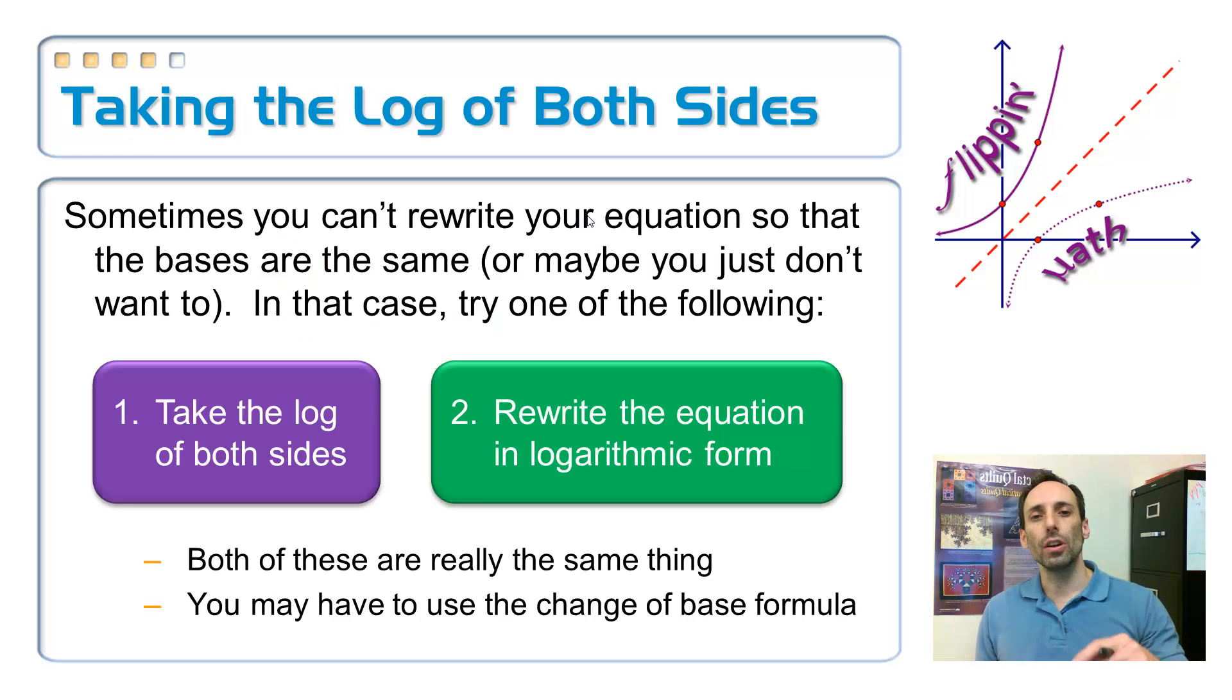So, basically, if you cannot rewrite the bases to be the same thing, or maybe you just don't want to, you take the log of both sides. All right? So, that's method number one. Just take the log of both sides.